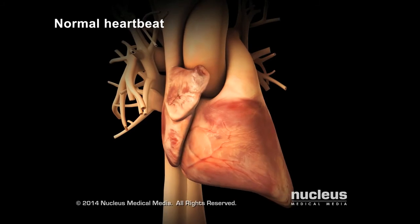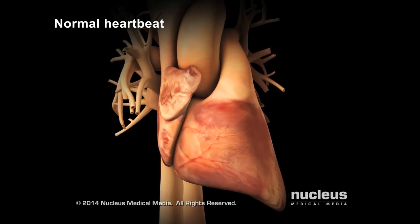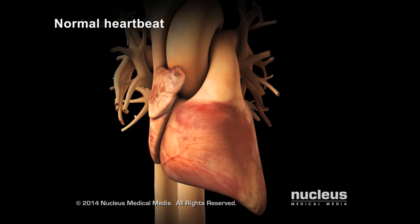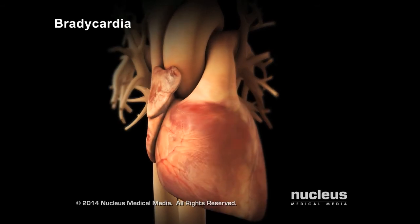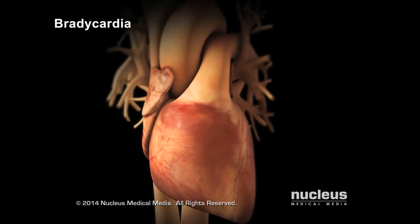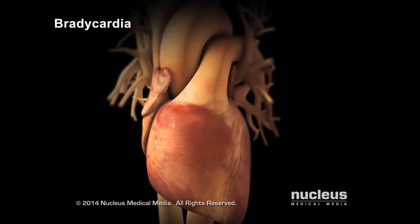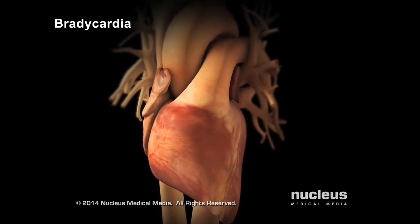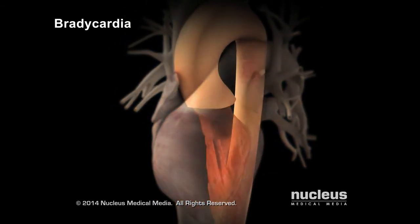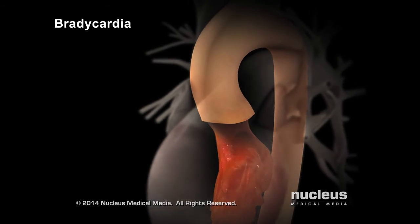Sometimes, problems with the SA node or problems with the pathway of the electrical impulses to the ventricles can cause the slow heartbeat in bradycardia. If the heart beats too slowly, the body may not receive enough oxygen-rich blood.